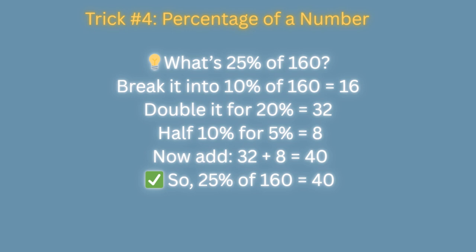Now let's move to trick 4: How to find percentages easily. What is 25% of 160? Break it into 10% which gives 16. Double it for 20% which gives 32. Half of 10% is 5% which gives 8. Now add 32 plus 8 which is 40. So, 25% of 160 is 40.